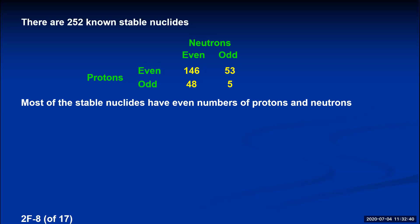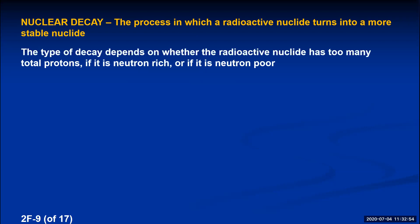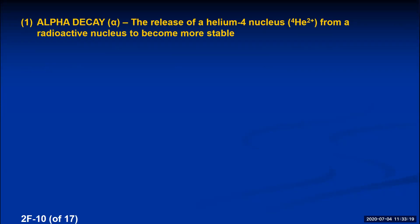For radioactive isotopes, because they are unstable, they break apart through a process called nuclear decay — the process in which a radioactive nuclide turns into a more stable nuclide. The type of decay depends on whether the nuclide has too many total protons, is neutron rich, or is neutron poor. One of the first types recognized was alpha decay.